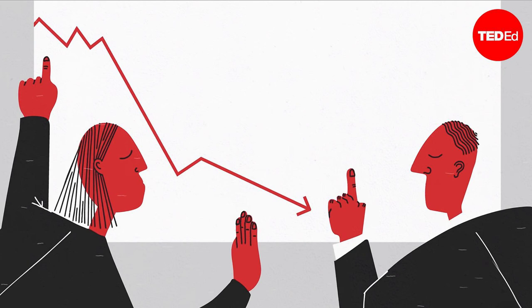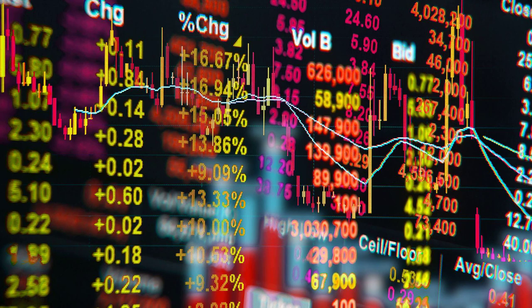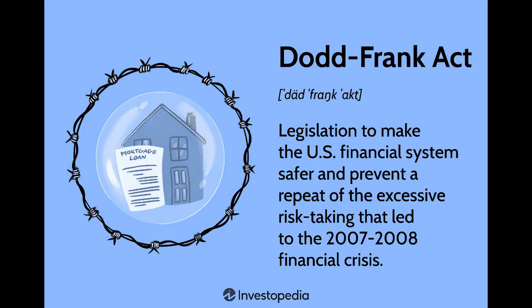Causes and Consequences: The Great Recession was a period of economic downturn that began in 2008 and lasted for several years. It was one of the worst economic crises in modern history, affecting millions of people around the world. In this segment, we will explore the causes of the Great Recession.